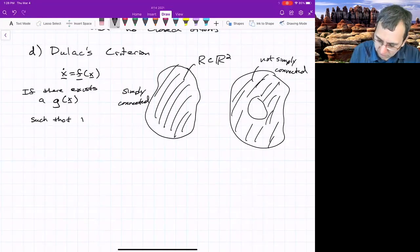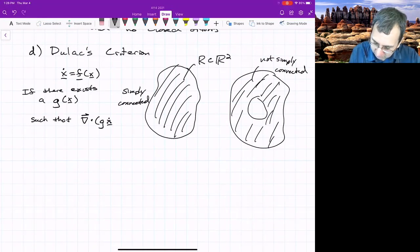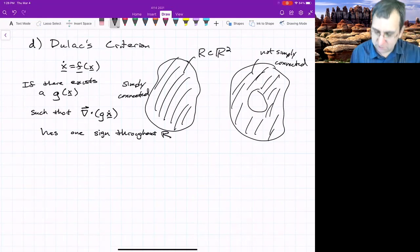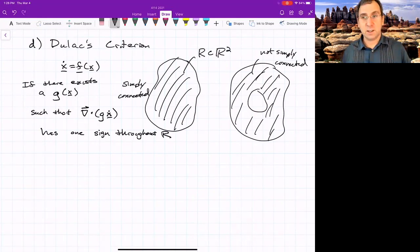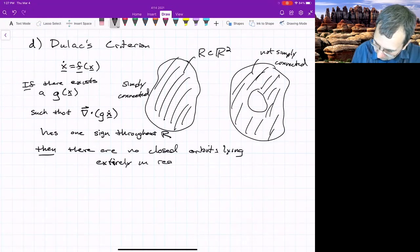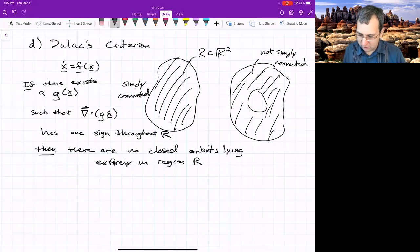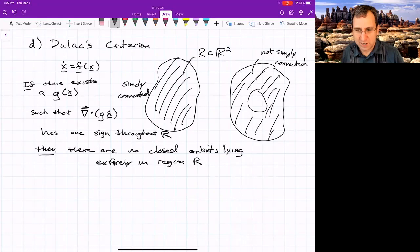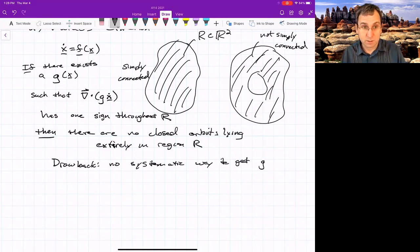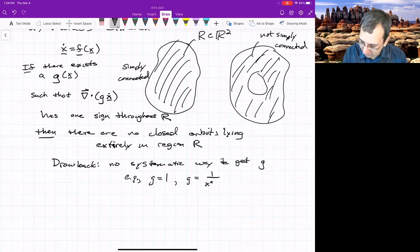And then there's the tricky part. If there exists a scalar function G such that the gradient of G times X dot has one sign, meaning it's either always positive or always negative, if it has one sign throughout this region, simply connected region, then there are no closed orbits lying entirely in that region. Now the problem again with this, just like with the Lyapunov function, is there's no algorithm for finding what G of X is. There's some candidates, no systematic way to get G. So you just sort of try some and see what happens. Sometimes G equal to just one works, something that's one over X raised to the A, Y raised to the B, or A and B, or something, or E to the AX. There's different things that you could do.